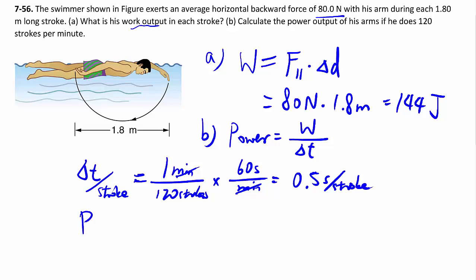If we take that and we go 144 joules, that's how much work to do per stroke, over 0.5 second per stroke, the strokes cancel out and you'll get 288 joules per second which is a watt. So that's your power output.